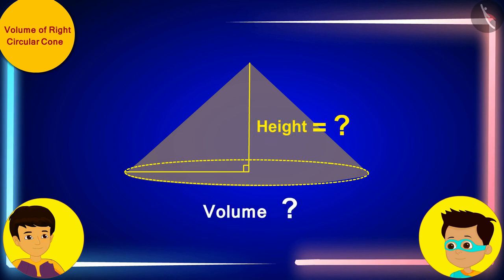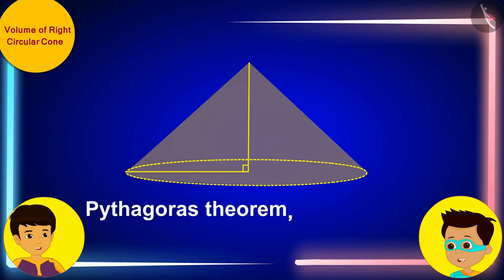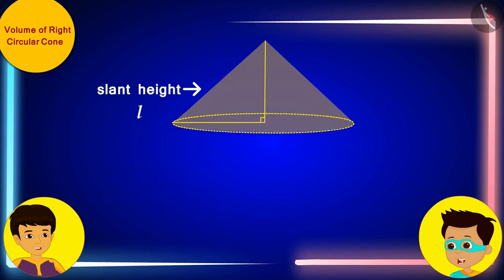Don't you remember Manas that according to the Pythagoras theorem, the square of the diagonal height l of any perpendicular circular cone is equal to the sum of the squares of the radius of its base r and the height h.